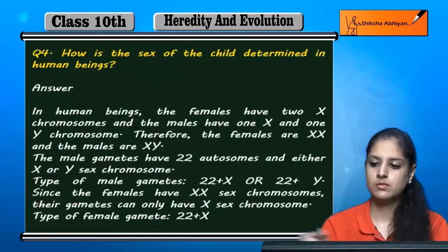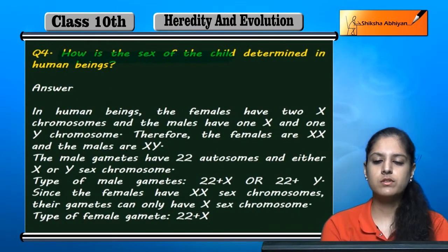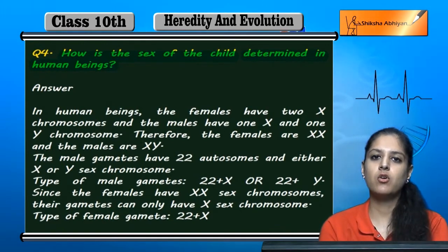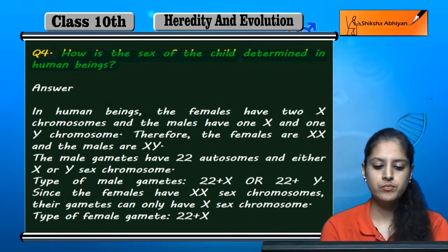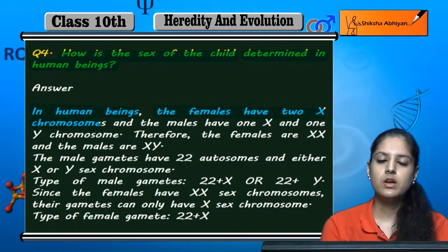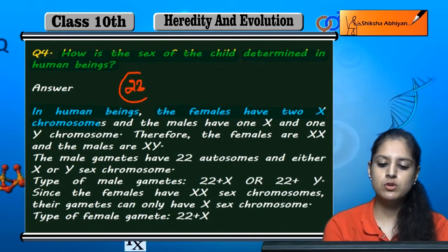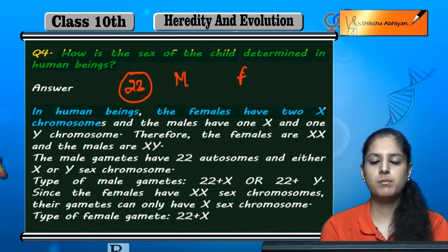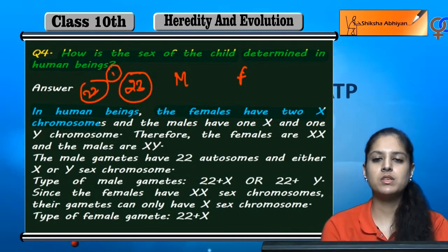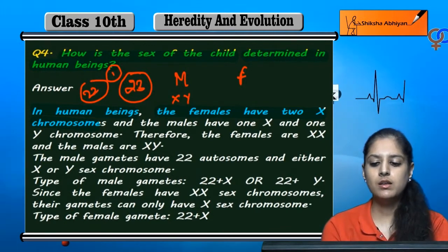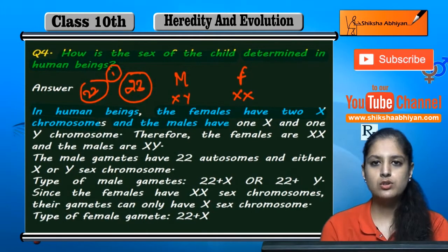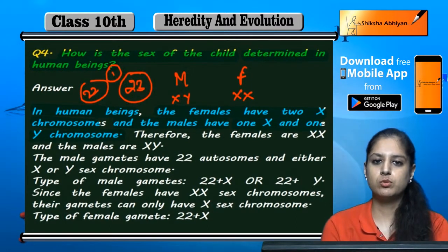Question 4: How is the sex of the child determined in human beings? In human beings, the female has two X chromosomes. There are 23 pairs of chromosomes in humans. Among these, 22 pairs are the same in both males and females. The male is XY and the female is XX, so the female has two X chromosomes and the male has one X and one Y chromosome.